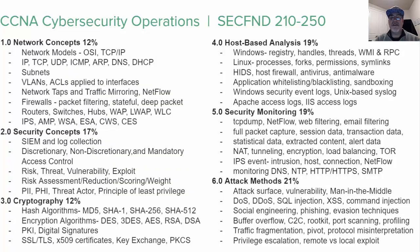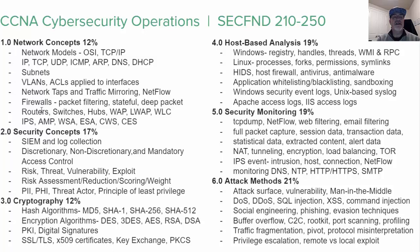For the SEC Fundamentals 210-250, there are six different sections. Section one is Network Concepts — basic network fundamentals worth 12% of the exam. It covers the OSI and TCP/IP models, protocols like IP, TCP, UDP, ICMP, ARP, DNS, and DHCP. You need to know how to identify subnets and subnetting, VLANs in a security context, ACLs applied to interfaces, and the difference between a physical network tap and traffic mirroring — a software network tap that clones traffic to another port.